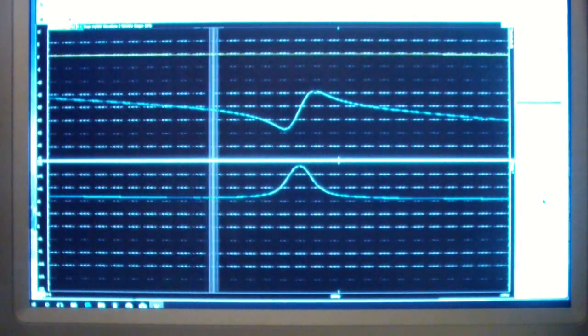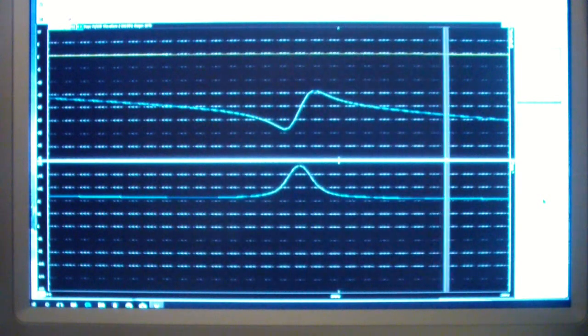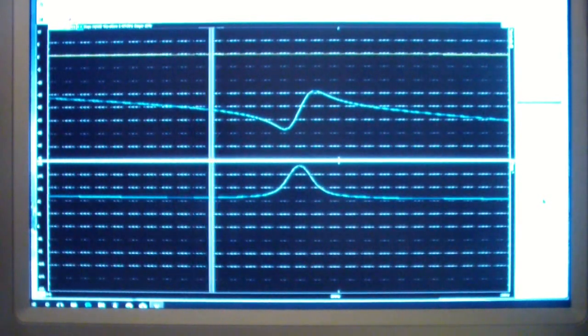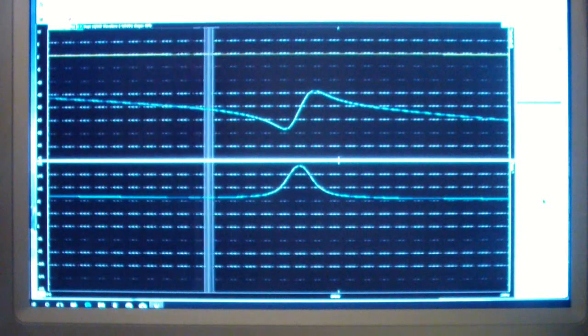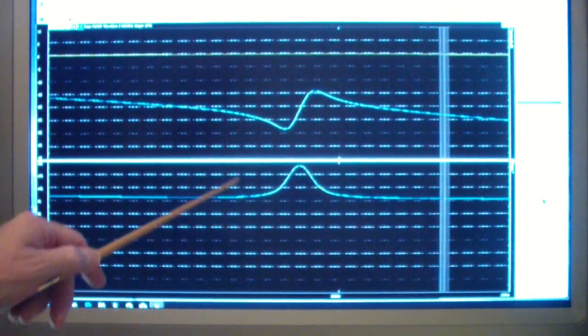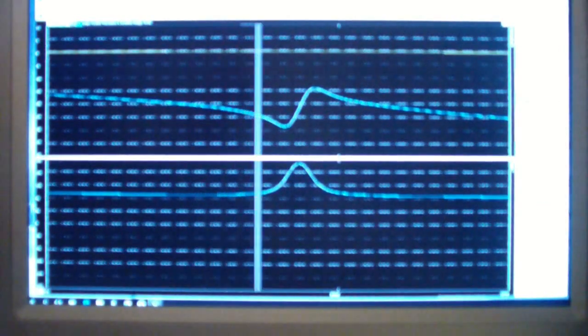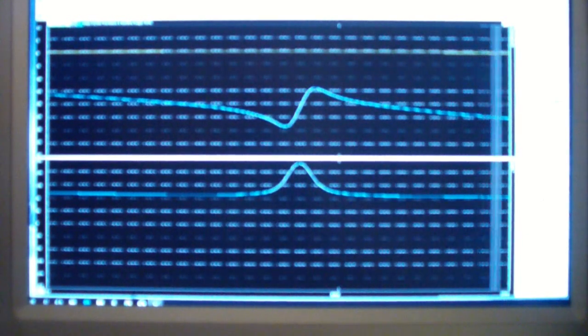Now, all we have done is we stopped the scope and the waveform generator and started the network analyzer. What the network analyzer does is it applies an input signal from the arbitrary waveform generator, and then compares the response on channel 1 to the response on channel 2, in other words, the gain.